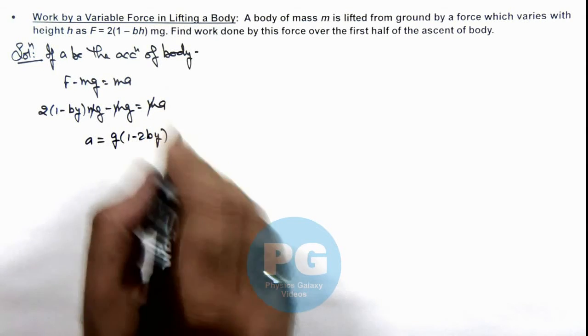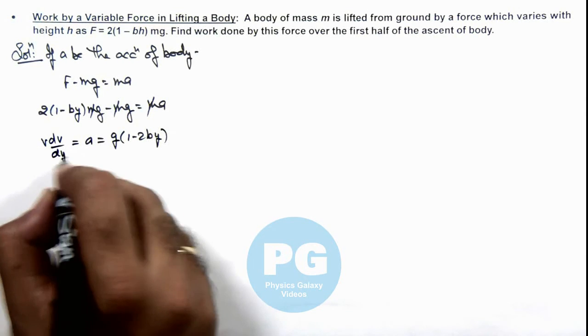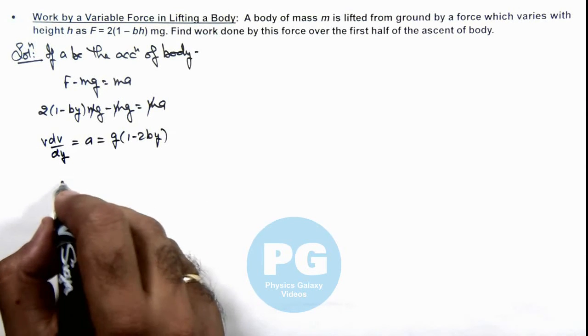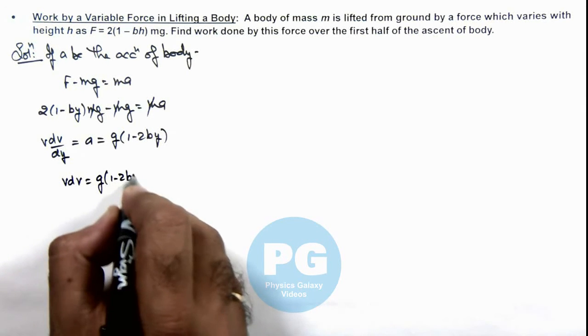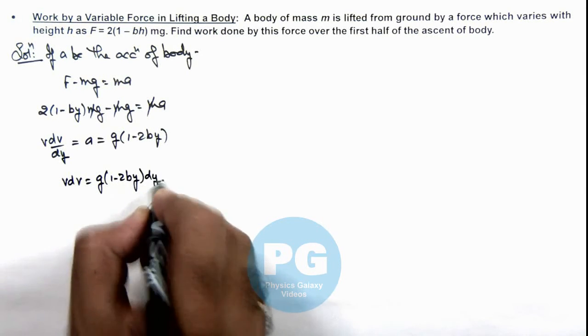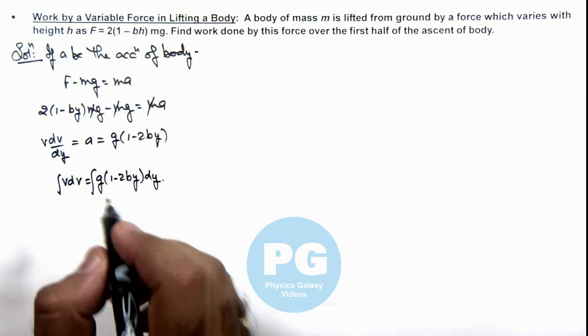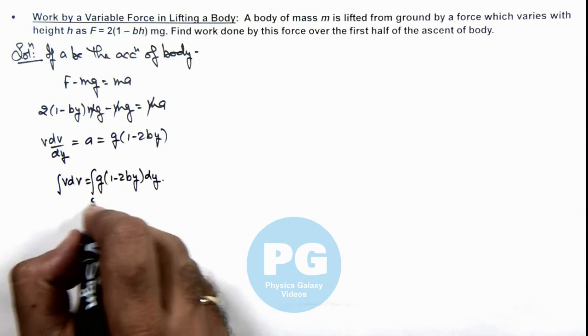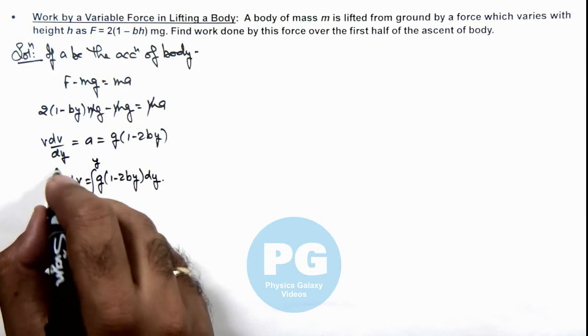To calculate the height of ascent we can write ay as v dv/dy, and this can be further written as v dv = g(1 - 2by)dy. If we integrate it, then here we can see at y = 0 the speed was zero and at a general height y the speed becomes v.